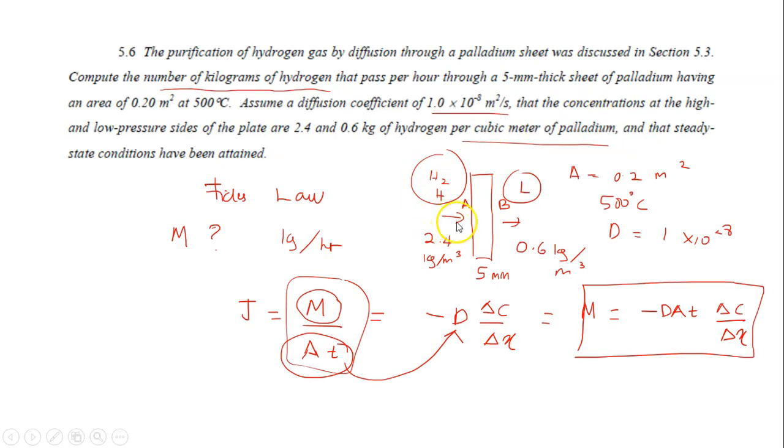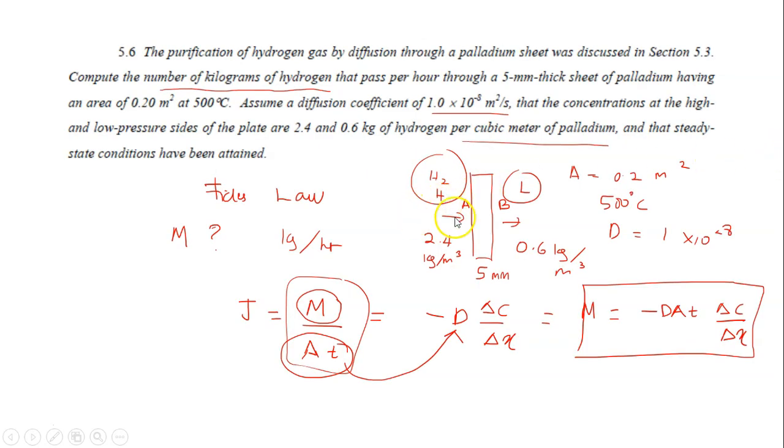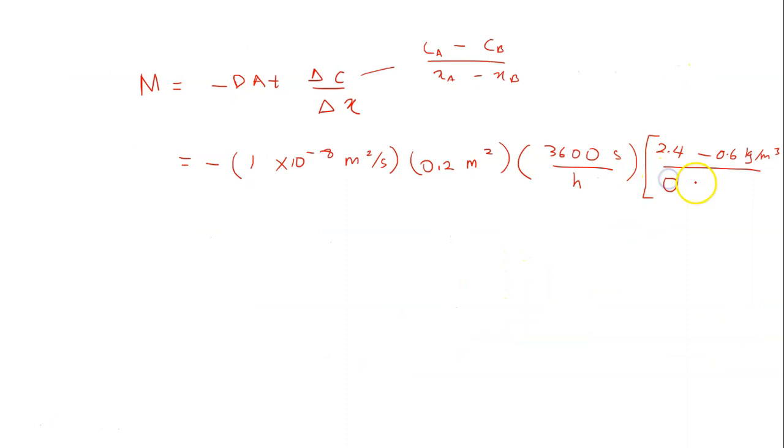And then this one is Δc, which is cₐ minus cᵦ over xₐ minus xᵦ. Cₐ in this case is 2.4 and cᵦ is 0.6. So this is 2.4 minus 0.6 kilogram per meter cubed divided by xₐ minus xᵦ. Because you know that the hydrogen gas diffuses starting from here, at the surface of this palladium sheet, we can say that xₐ is 0. And the thickness of this plate is 5 mm, meaning that the atoms diffuse through the palladium sheet at 5 mm distance. So xᵦ here is 5 mm. Let's just put it here: xₐ is 0 minus 5 × 10⁻³ meters.